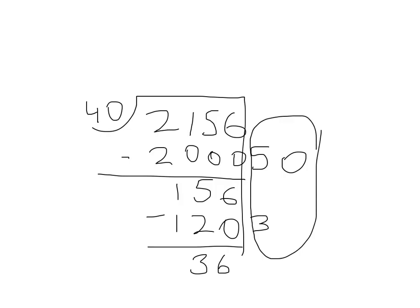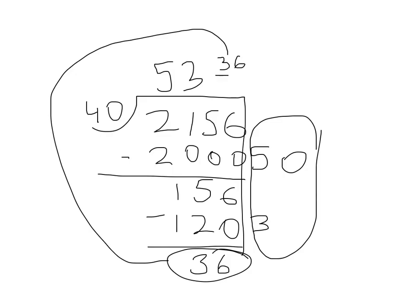First, I'm going to guess how many 40s are in 2,156. I think about 50 40s are in 2,156. Now I know that 40 times 5 is 200 plus 0. So 2,000.